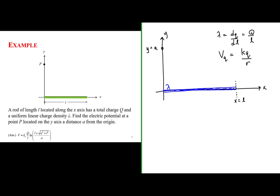How do we calculate the electric potential due to this line of charge? Let's not do the whole thing at once. Let's break up this line of charge into very tiny pieces and look at one representative piece. This representative piece of charge has an amount of charge equal to dQ — a tiny bit of charge located at a distance x from the origin.